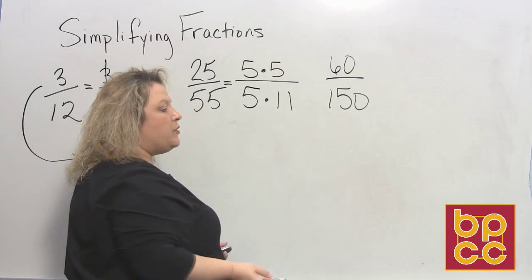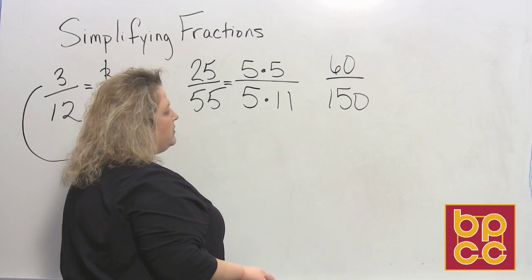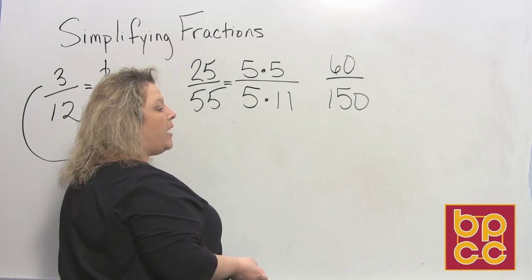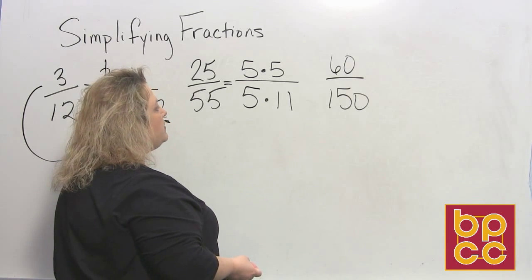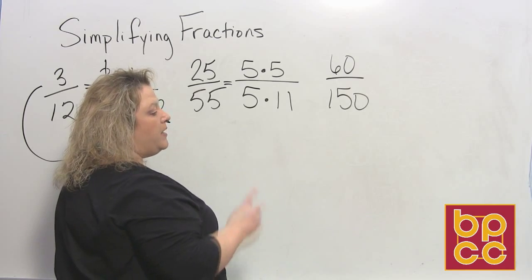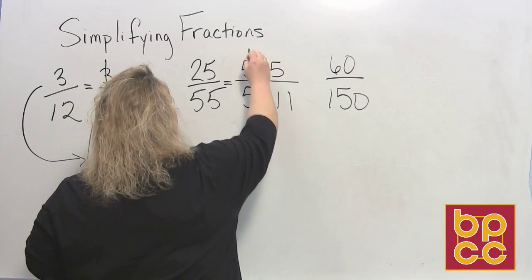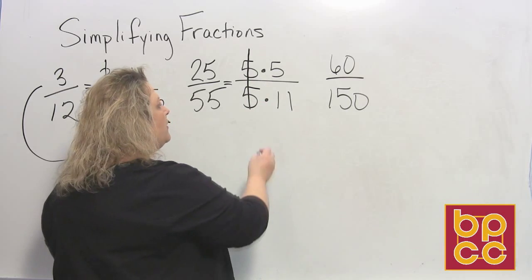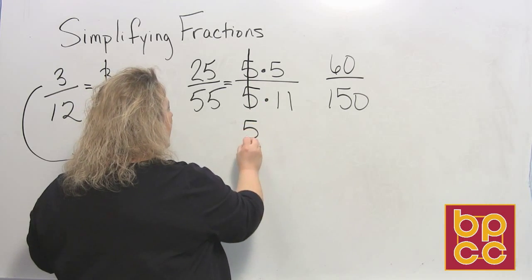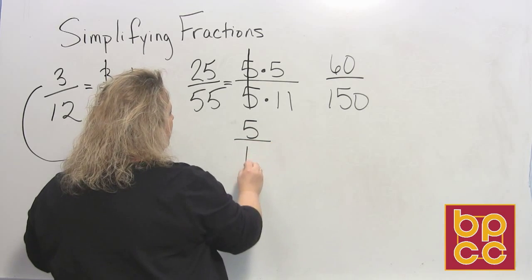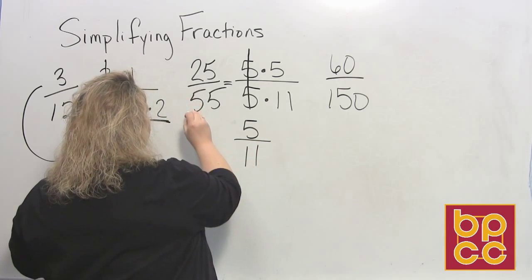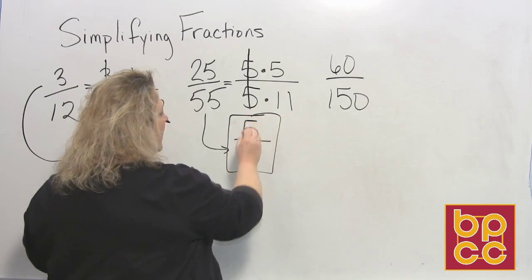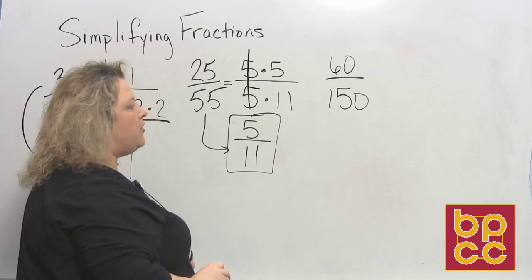Again, those are both prime numbers, so that's as far as I can go. Then we want to divide out or reduce this fraction by whatever the greatest common factor is. The biggest number that they have in common is 1, 5. So we divide that out and we write down what's left over. The top, the numerator, has a 5 left. The denominator has an 11 left. So 25 fifty-fifths is the same as 5 elevenths reduced to lowest terms.